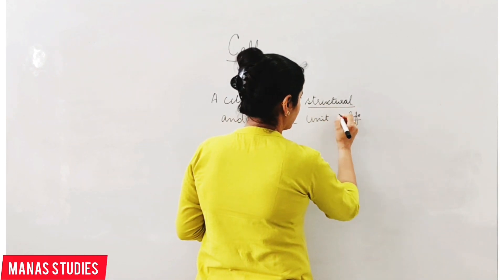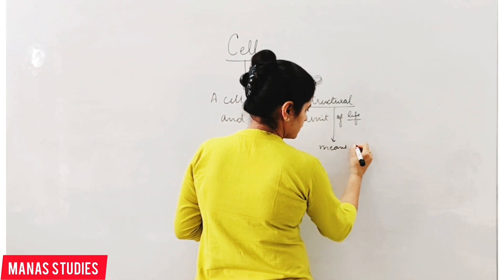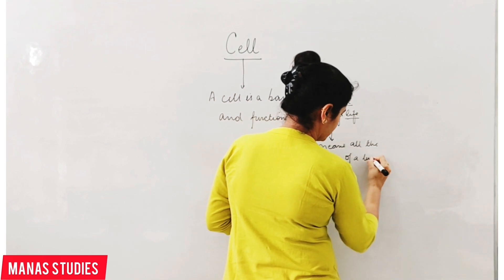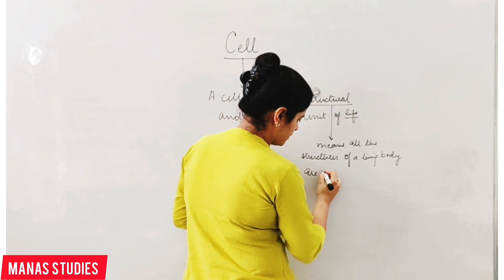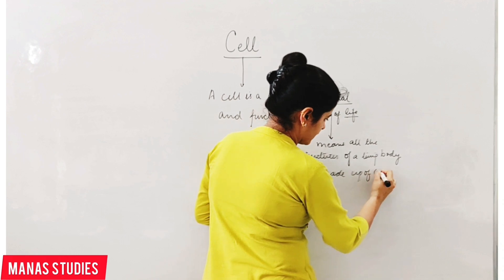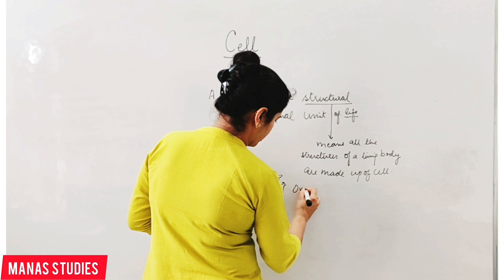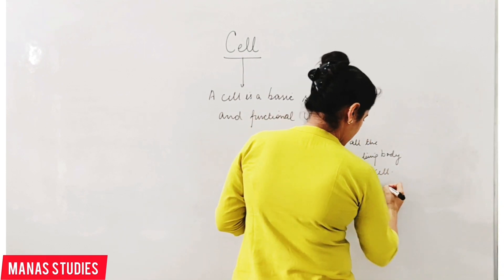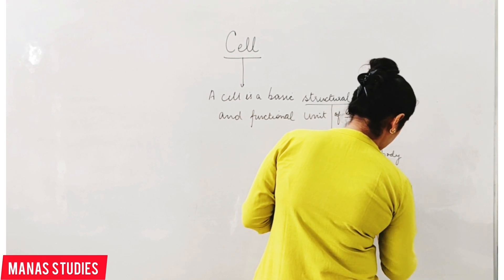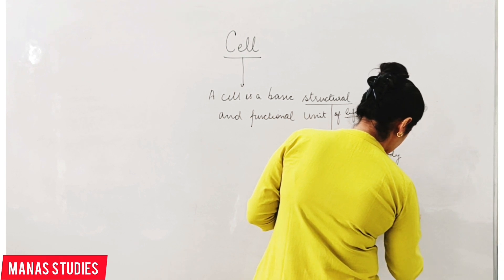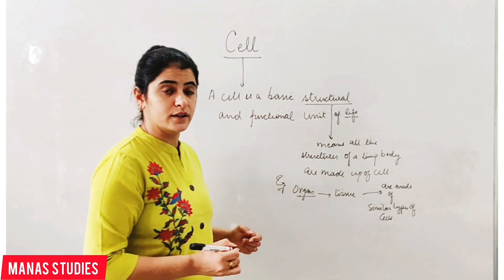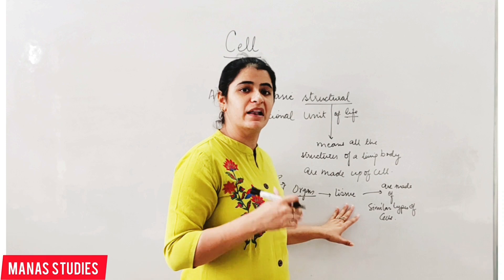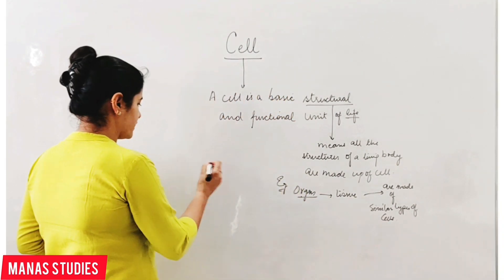What do you mean by a structural unit? Structural unit means all the structures of a living body are made up of cells. For example, if we talk about an organ, that organ is made up of tissue which in turn are made up of similar types of cells. So cells are the main unit which combine to form a tissue, and those tissues which are working in a similar way combine to form an organ.